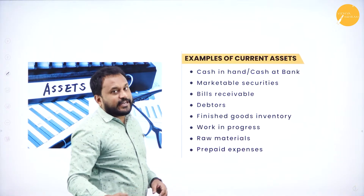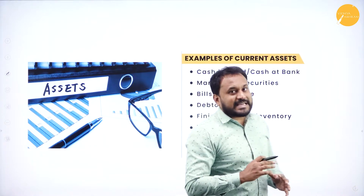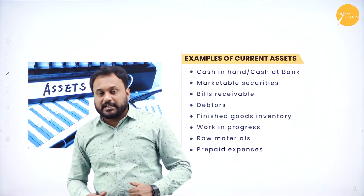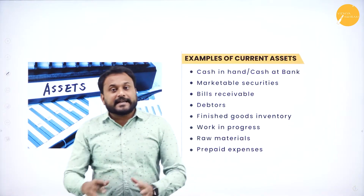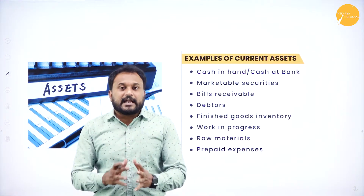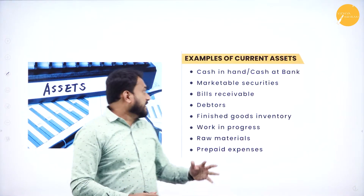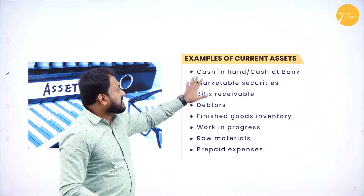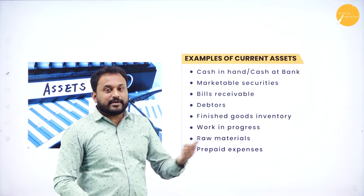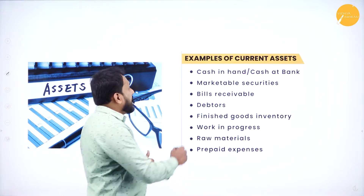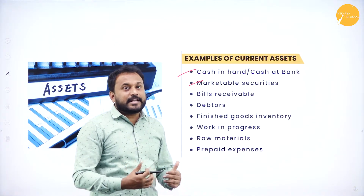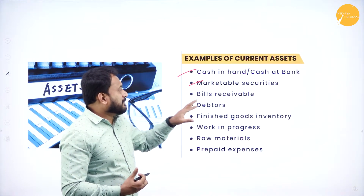Next, examples of current assets. Current assets are those assets which can be converted to cash. One is cash in hand — cash you already have, that is a current asset. Cash at bank — whenever you want, you can go and get the cash. Next is marketable securities — the securities which are in the market and you can buy and sell immediately. That is called marketable securities.